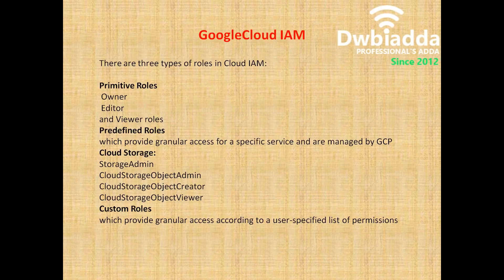There are three types of roles in Google Cloud Identity and Access Management. One is Primitive roles, another one is Pre-defined roles, and the third one is Custom roles. In the case of Primitive roles, we will be talking about Owner, Editor, and Viewer.